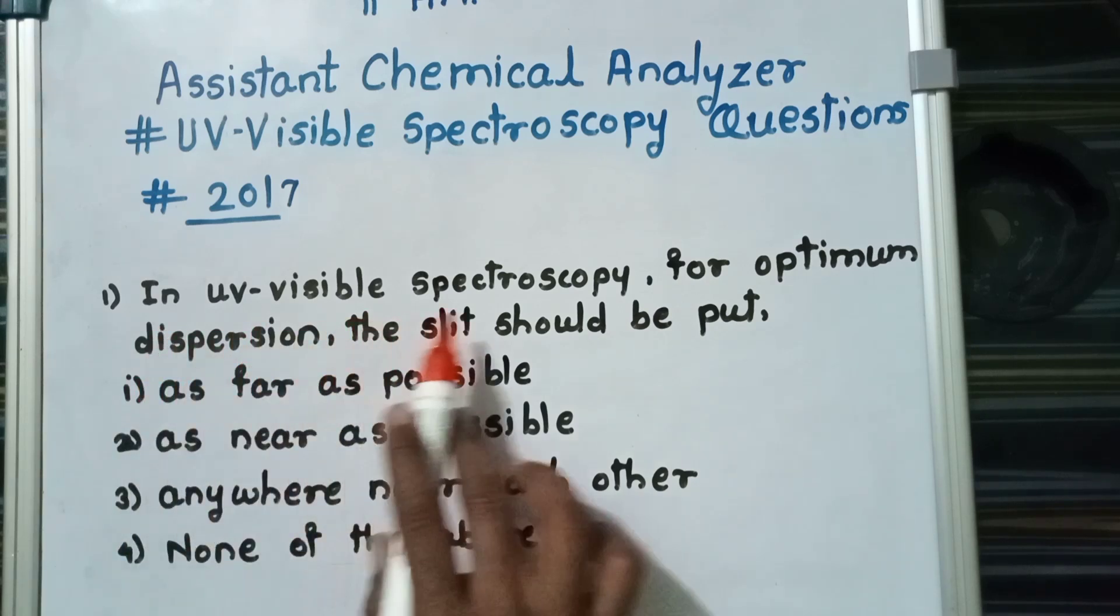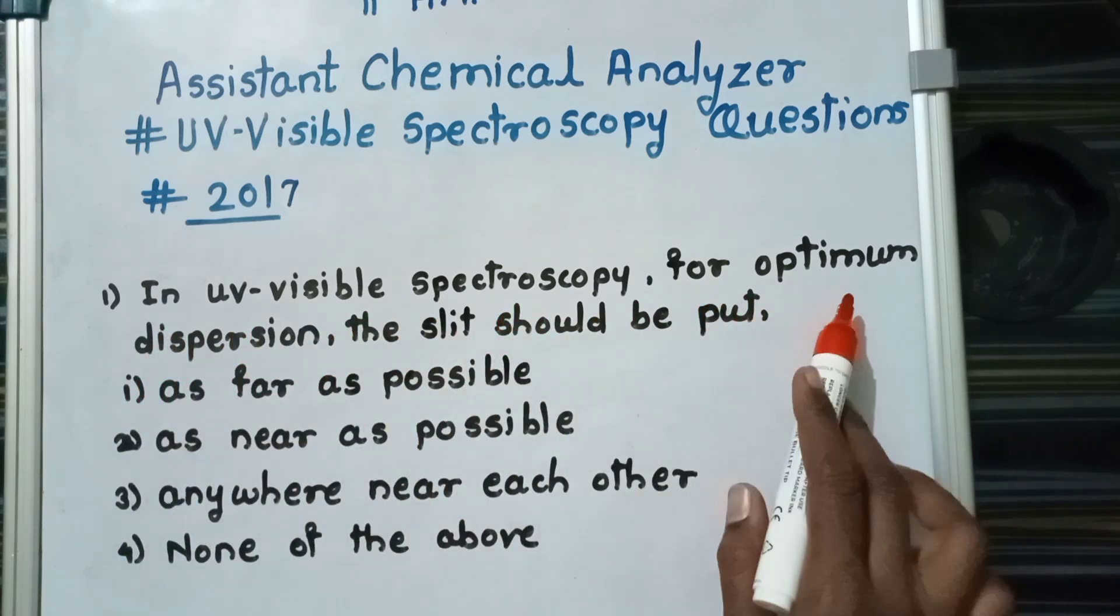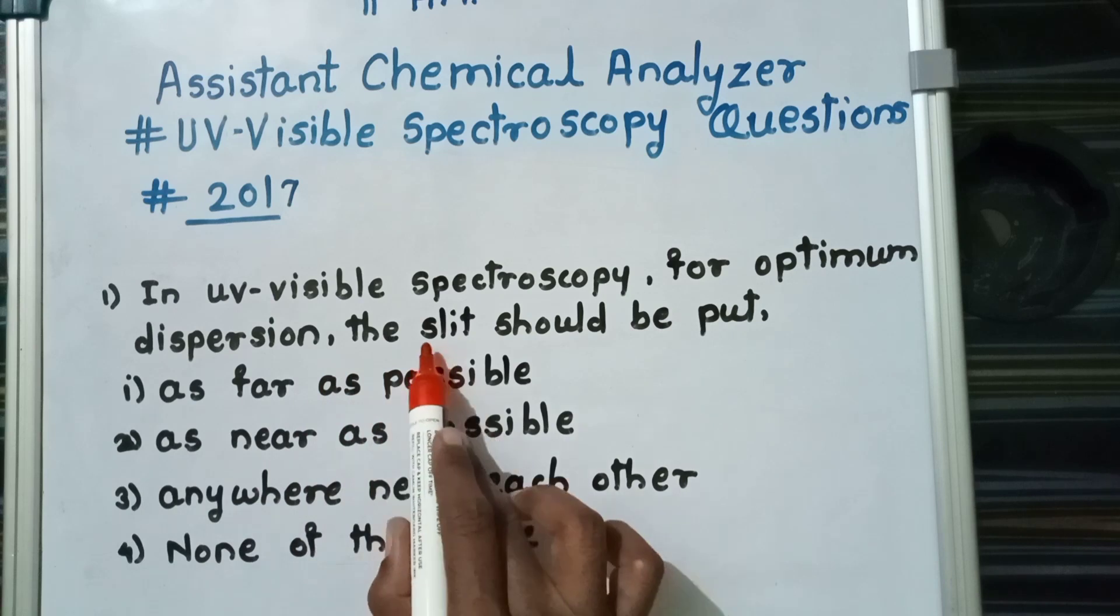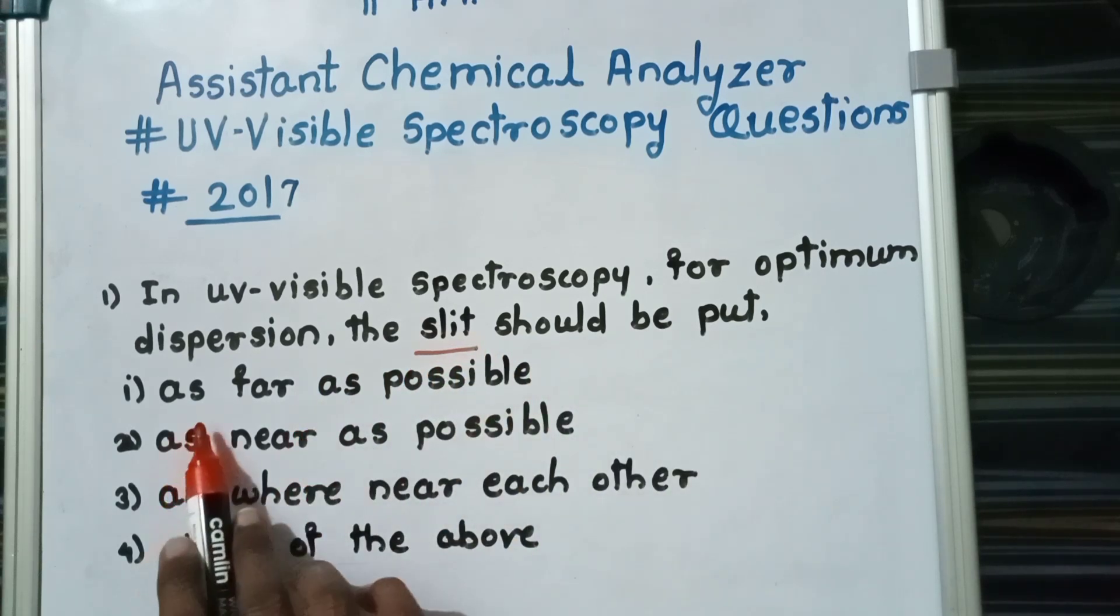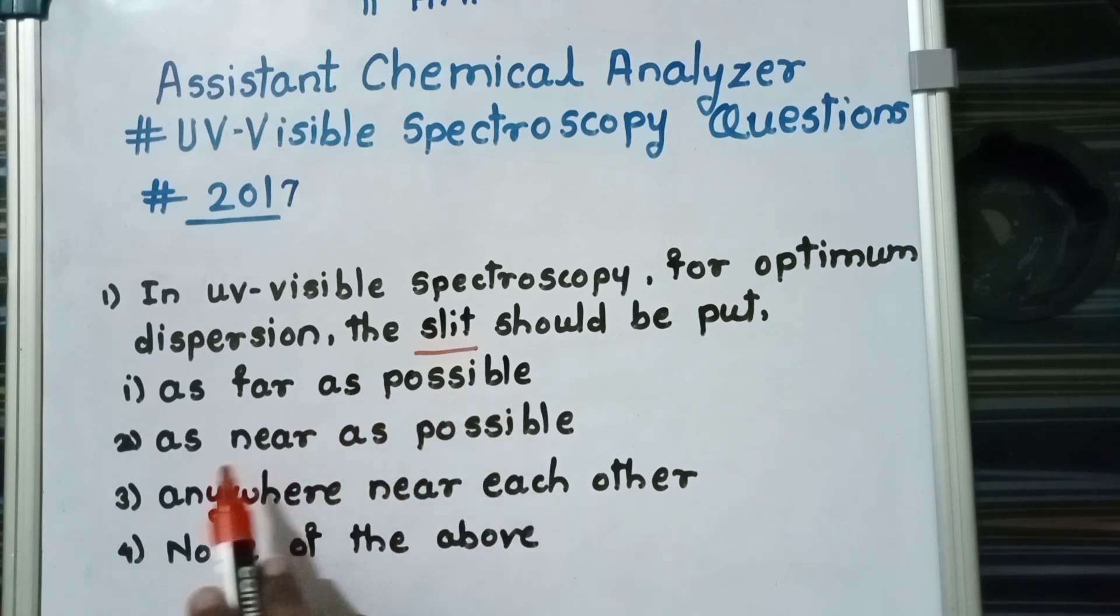The question is in UV-visible spectroscopy for optimum dispersion, the slit should be put. Options are as far as possible, as near as possible, anywhere near each other, and none of the above. The correct answer is as near as possible.